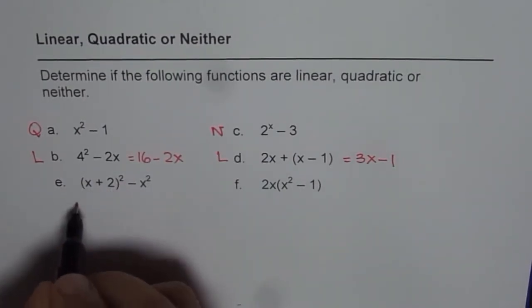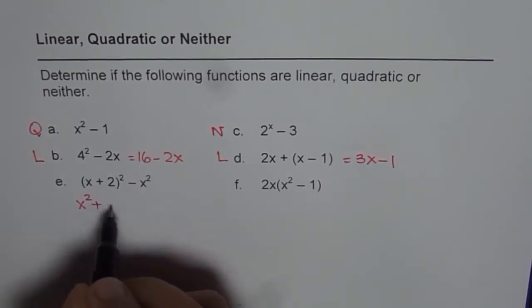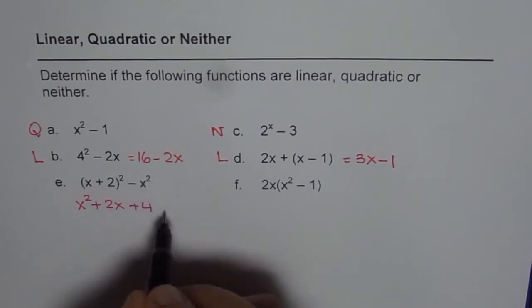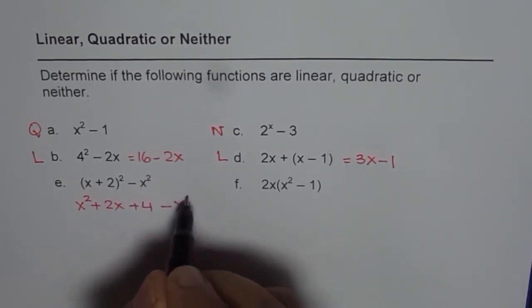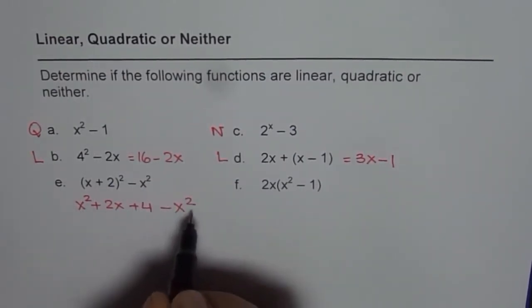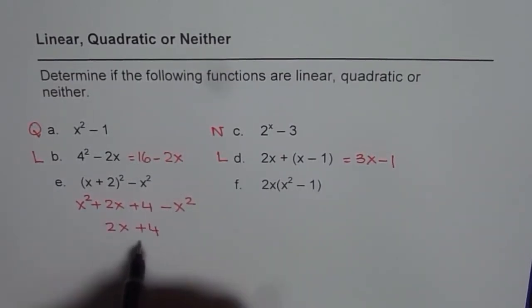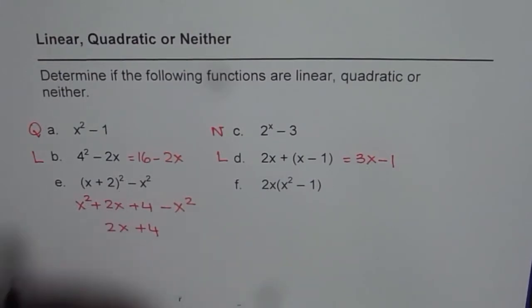(x + 2)² is x² + 2x + 4 minus x². So x² - x² is 0. You are left with 2x + 4, which is linear. So this particular function is linear.